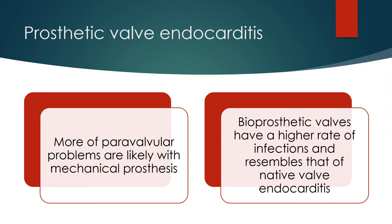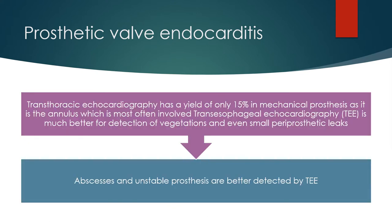Bioprosthetic valves have a higher rate of infections and resemble that of native valve endocarditis. Transthoracic echocardiography has a yield of only 15% in mechanical prosthesis, as it is the annulus which is most often involved.